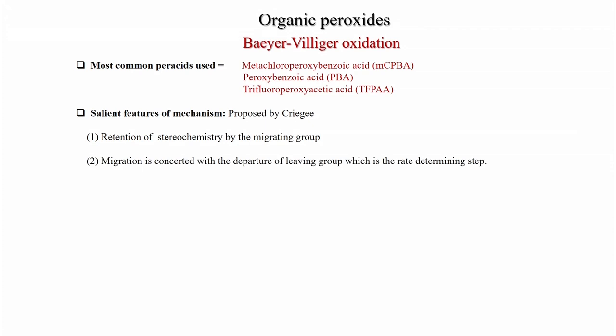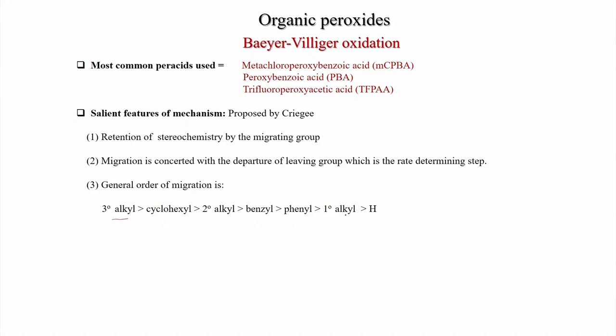The leaving group ultimately becomes an acid — for example, meta-chloroperoxybenzoic acid becomes meta-chlorobenzoic acid, and that is the rate-determining step. The general order of migration is: tertiary alkyl, then cyclohexyl, secondary alkyl, benzyl, phenyl, and primary alkyl.